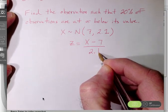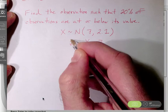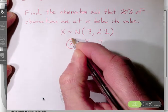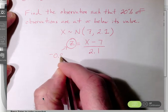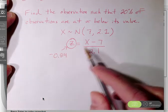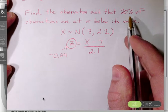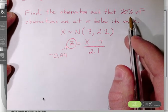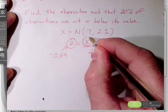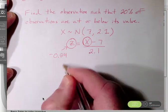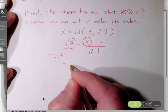But understand the inverse norm command just gave us the z-score that we are interested in. This is where the negative 0.84 will go. This is the z-score that corresponds to the 20th percentile. So in order to solve for the observation that I'm interested in, that's the value of x, all I need to do is solve this equation.